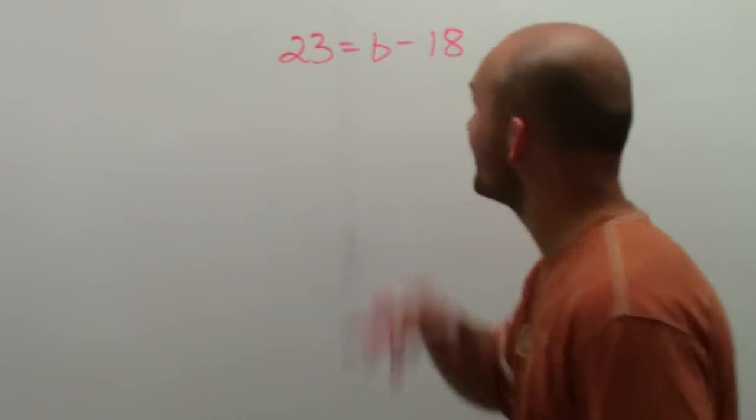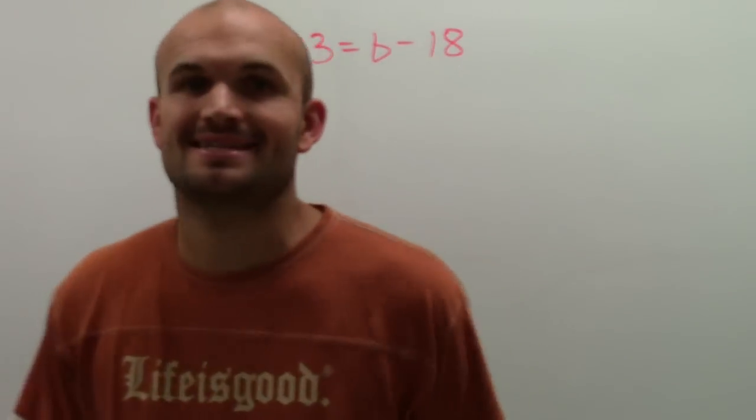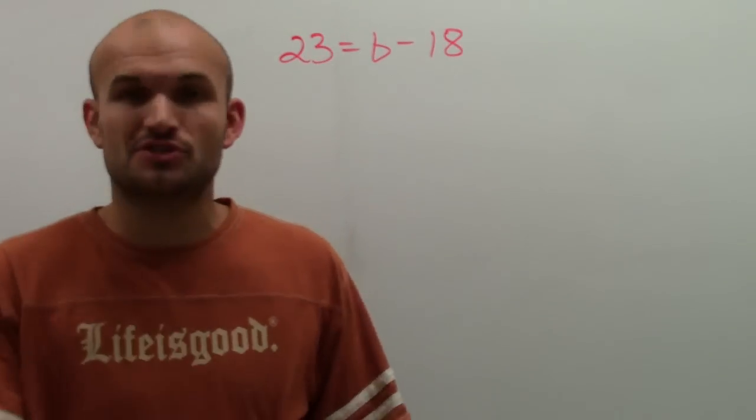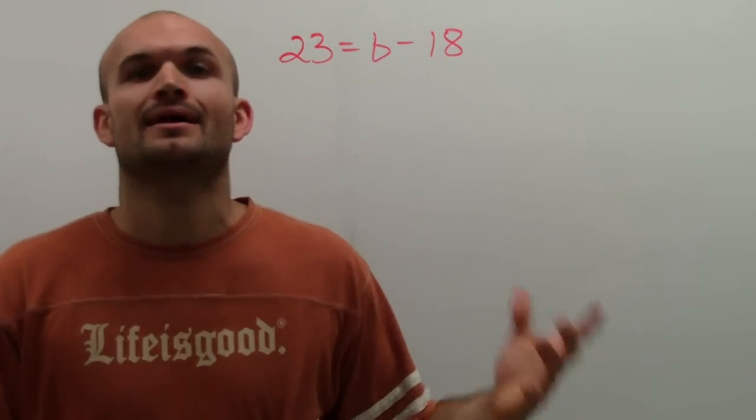Ta-da! Right here, I have 23 equals b minus 18. And a lot of students take this and they get it confused because they're so used to having the variable on the left side.